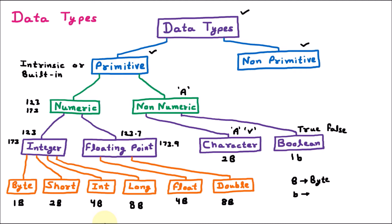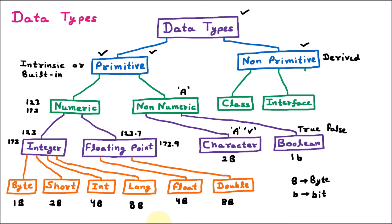The next data type is non-primitive. Non-primitive means derived data types — they are derived from primitive data types, which is why they are called derived. Under non-primitive data types we have: class, interface, and array. In a class we can have integer, float, or other data types. Interfaces are used for multiple inheritance. Arrays, for example an array of characters, are derived from the primitive character type. So class, interface, and array are non-primitive data types.